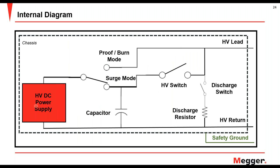The internal diagram of a thumper — any thumper — follows the same basic principle. You have a high voltage power supply, then a switch that can go to surge mode (thumping) or burn mode (high pot). Your high voltage switch and capacitor work hand in hand. In surge mode, you build the capacitor up to full voltage, close the high voltage switch, which outputs to your high voltage lead. You also have your return connected to the concentric neutral, so whenever you output voltage it comes back on the high voltage return — that's how you know your fault distance on arc reflection. The discharge resistor will bleed any high voltage off.